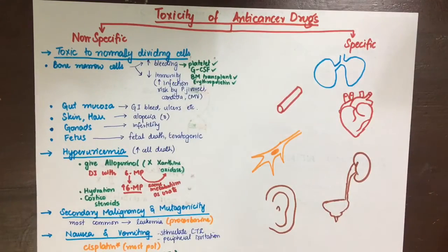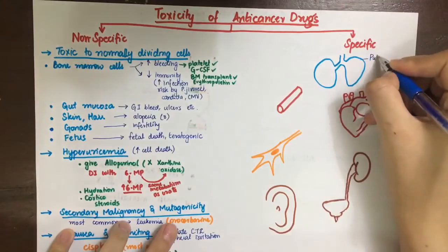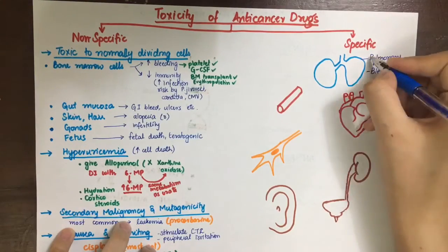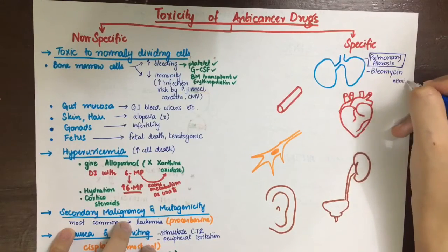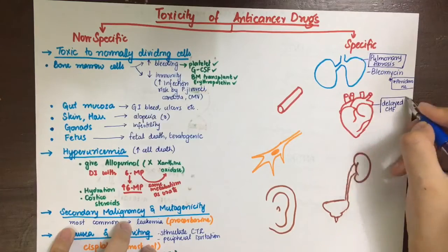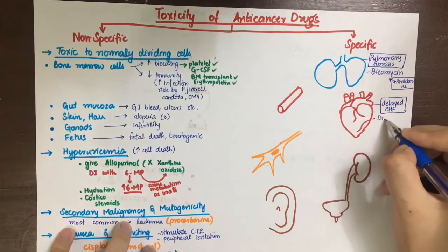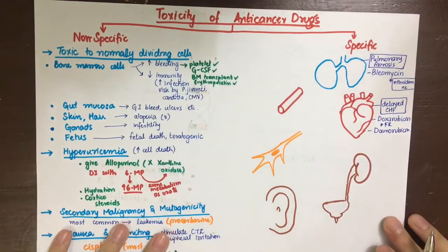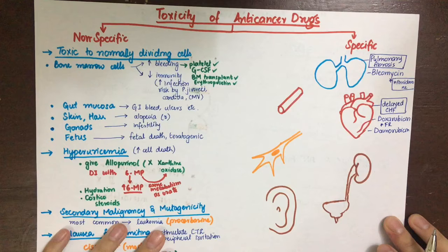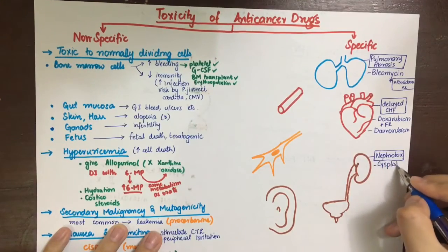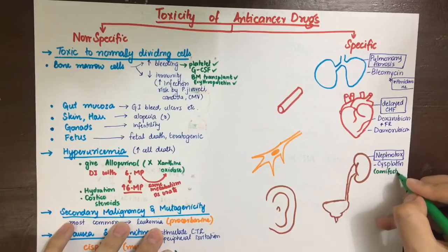Regarding specific toxicities: pulmonary fibrosis and pneumonitis are associated with bleomycin — notably, amiodarone from antiarrhythmics also causes pulmonary fibrosis. Cardiotoxicity in the form of delayed congestive heart failure is associated with doxorubicin and daunorubicin, due to free radical formation not effectively detoxified in heart cells. Cisplatin and methotrexate are both associated with nephrotoxicity, which can be managed by administering amifostine.